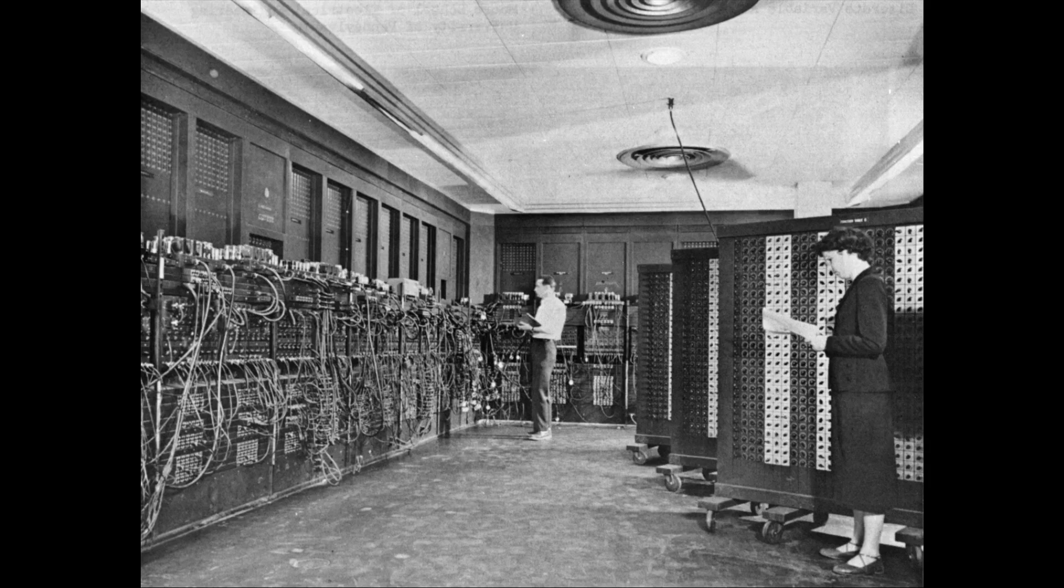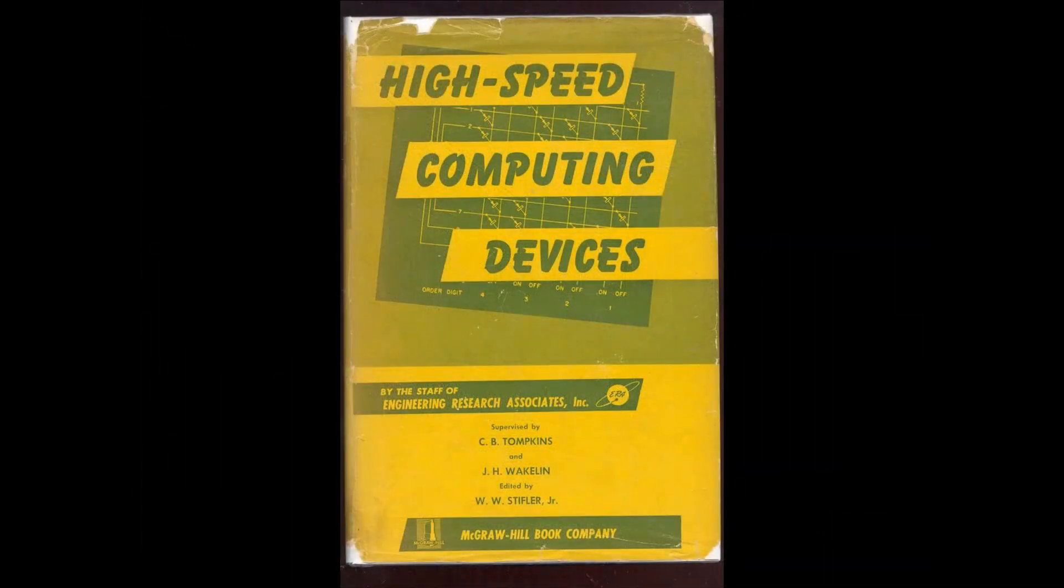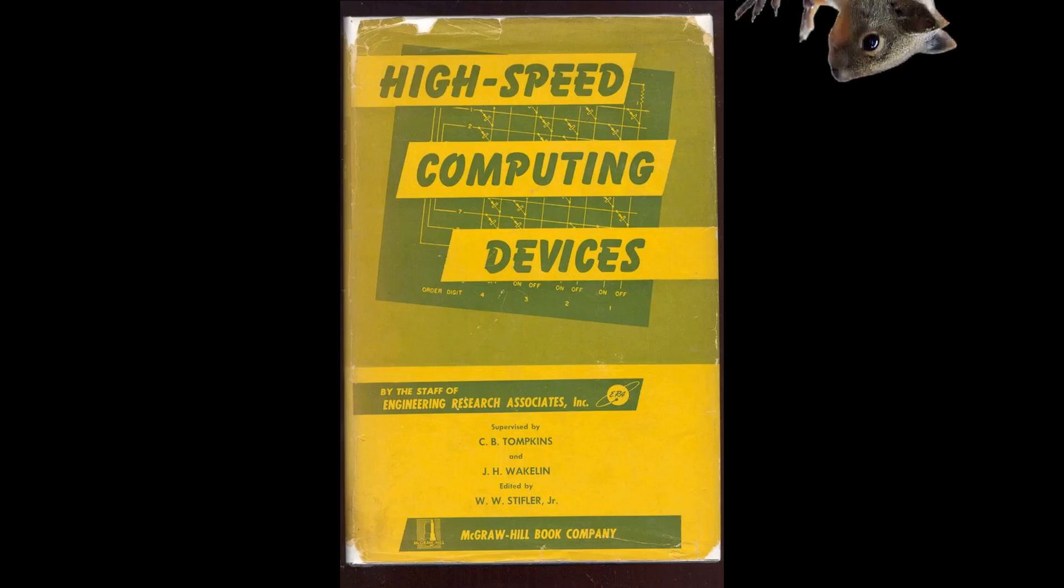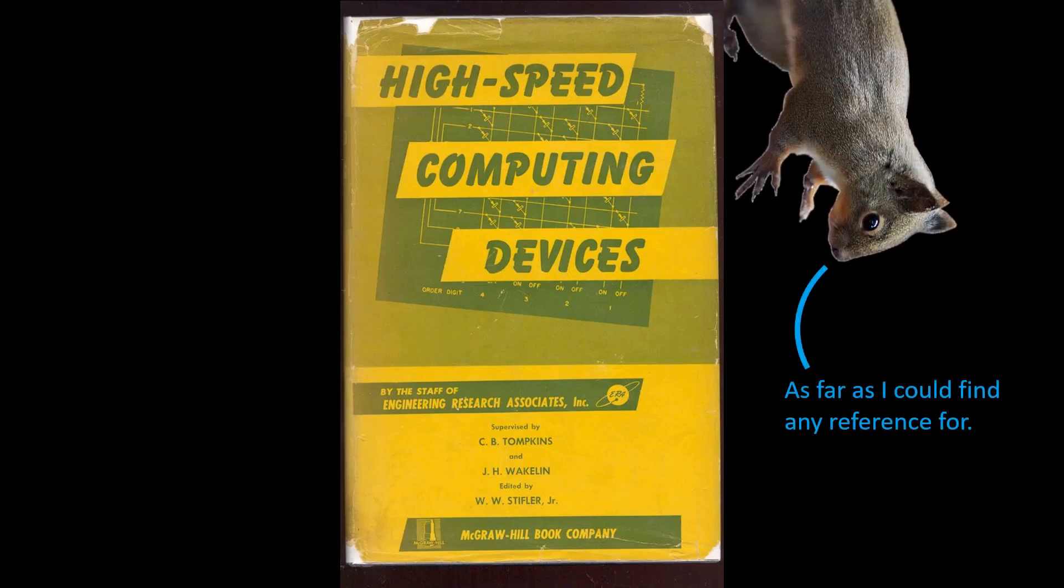ENIAC didn't even take advantage of radix economy in the first place. It still used base 10. Presumably because it was simpler and didn't require base conversions, but also because the radix economy solution to the problem wasn't published until 1950.